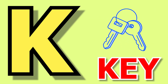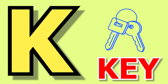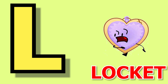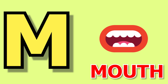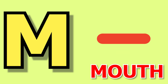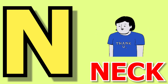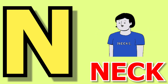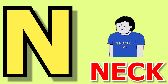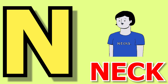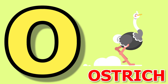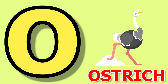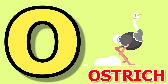K for key, key means chubby. L for locate, locate means locate. M for mouth, mouth means moo. N for neck, neck means garden. O for ostrich, ostrich means ostrich.